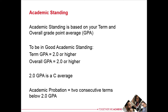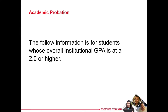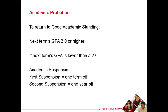Students who are on academic probation had two consecutive terms below a 2.0 GPA. The following information is for students whose overall institutional GPA is at a 2.0 or higher. In order to return to good academic standing, students must have their next term GPA be a 2.0 or higher. When this requirement is met, you will be in good academic standing.